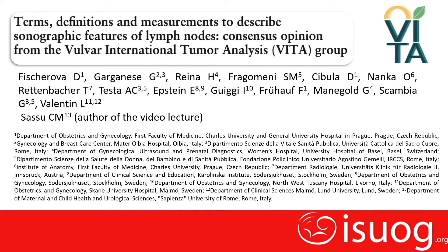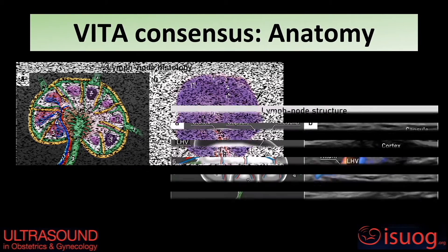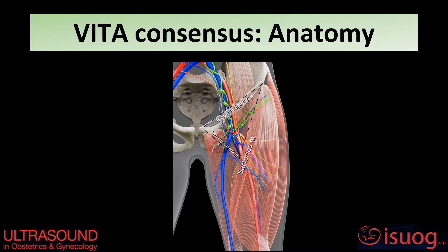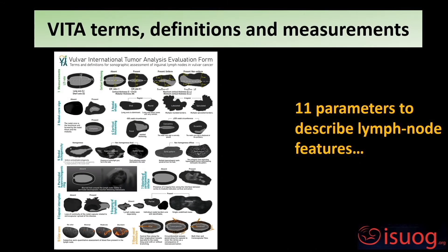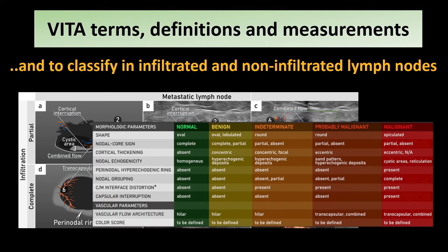The Vulvar International Tumor Analysis, the VITA group, have agreed on terminology, definitions and measurement techniques to describe the inguinal lymph nodes. This consensus provides important and essential information regarding lymph node and inguinal region anatomy. It removes any doubts about the methodology of lymph node assessment in the groin. The consensus collects 11 parameters to describe lymph node features and suggests a classification of groin lymph nodes as non-infiltrated or infiltrated based on their ultrasound appearance.